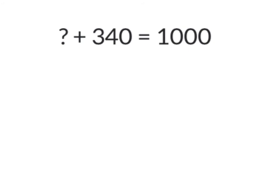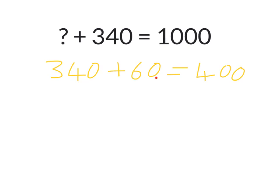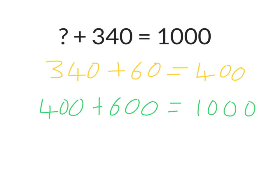Now let's look at one more question where the missing value is at the beginning: what plus 340 equals 1000? Again I'm going to go up from 340 to get to my nearest 100. I know that 340 plus 60 more will get me to 400, because 40 plus 60 equals 100. But I need to get all the way to 1000, so 400 plus 600 more will get me to 1000. Now I need to look at how much I added altogether — I added 60 and 600, so altogether I added 660. So the answer is 660.